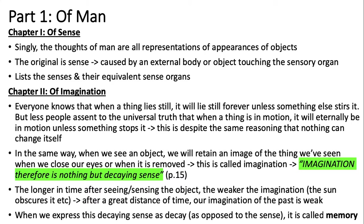Everyone knows that when a thing lies still it will lie still forever unless something else stirs it, but fewer people accept the universal truth that when a thing is in motion it will eternally be in motion unless something stops it. In the same way, when we see an object we retain an image of it even when we close our eyes or when it is removed — and this is called imagination. 'Imagination therefore is nothing but decaying sense.' The longer the time after sensing the object, the weaker the imagination; and when we express this decaying sense over time, it is called memory. He's essentially saying that memory, imagination, and sense are all the same things at different timings and perceptions. Memory of many things is called experience.